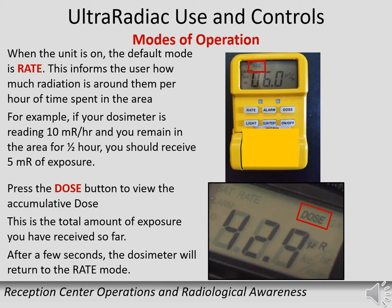There are two modes of operation. The default mode is rate, which informs the user how much radiation is around them per hour. For example, if you spend 30 minutes in a 10 mRem per hour field, you would receive about 5 mRem of exposure. The dose mode allows you to track your cumulative exposure while performing your activity, just like the direct reading dosimeter, and is the mode used most often for the McGuire Nuclear Station response.